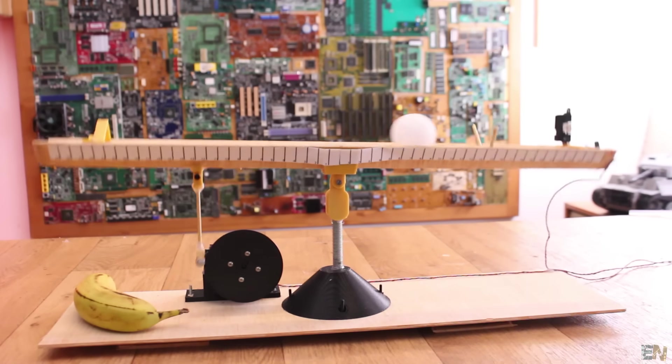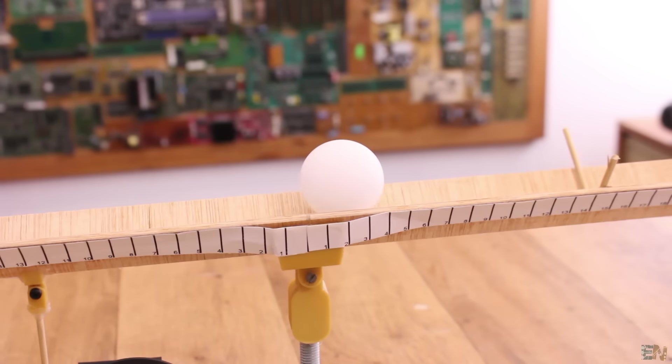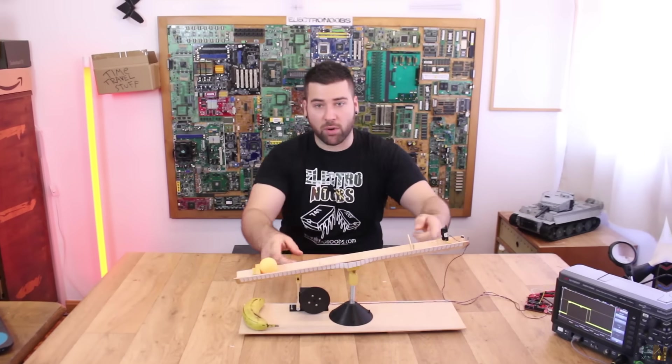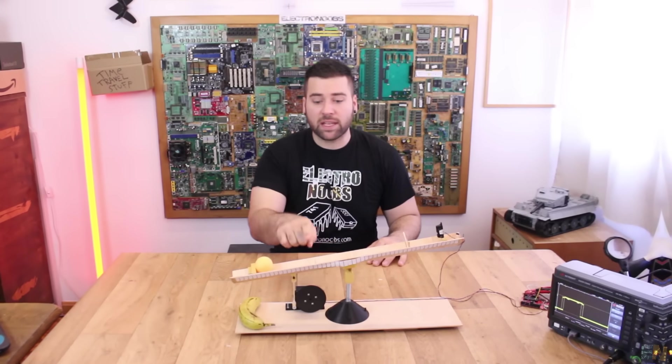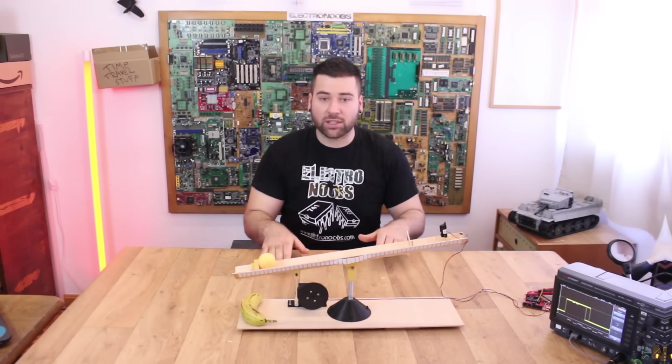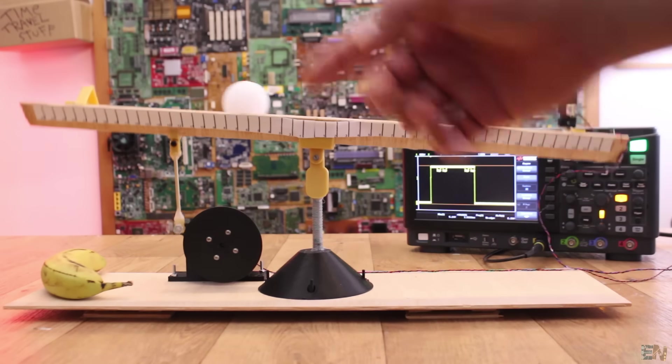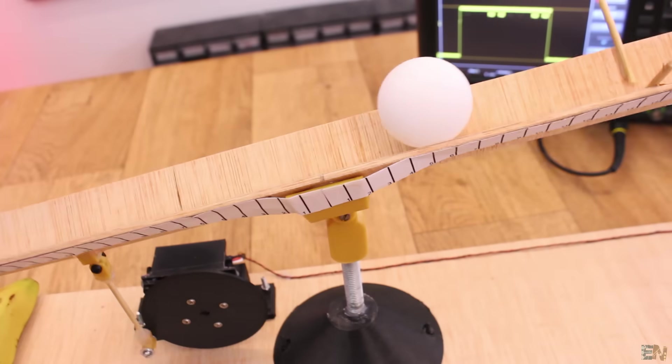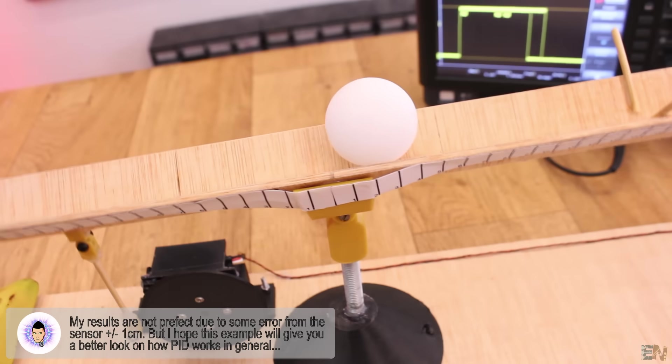This is called a PID control for a balance with a ping pong ball. So the basic principle will go like this. We have an infrared sensor that will measure the distance from the sensor to the ping pong ball. And at the same time we have a servo motor that will move the bar up and down and by that control the position of the ball. So all we have to do is apply the PID control and react to the speed and to the position of the ball and keep this ping pong ball always in the middle.